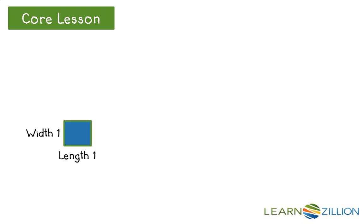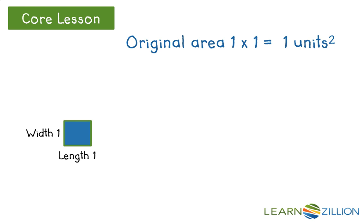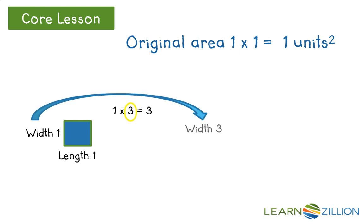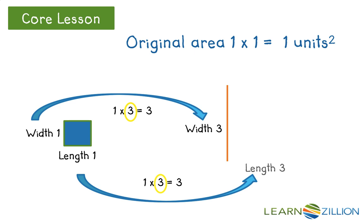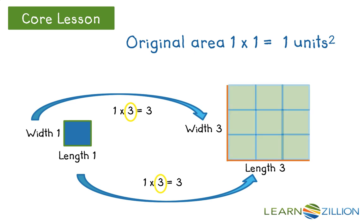Now let's generate a scale drawing with a scale factor of 3. The original drawing has dimensions of 1 unit by 1 unit for length and width. When we multiply by a scale factor of 3, the scale drawing has dimensions of 3 by 3 units. You can see by the units in the scale drawing that the scaled area is 9 square units.